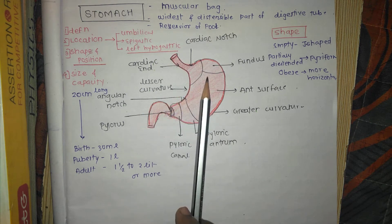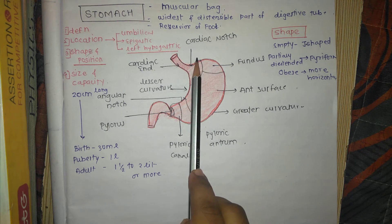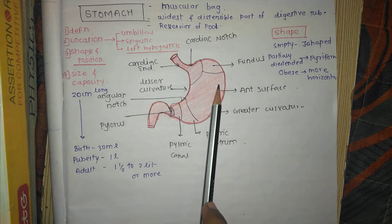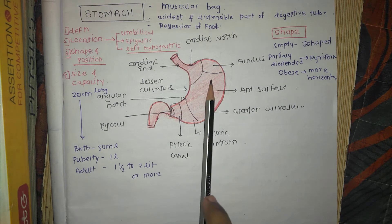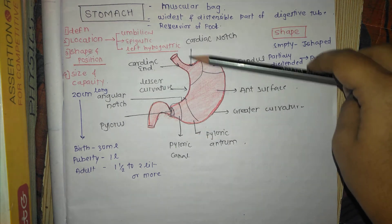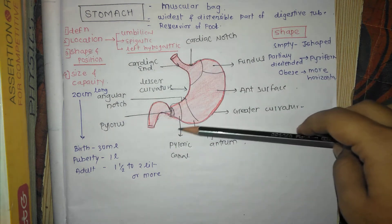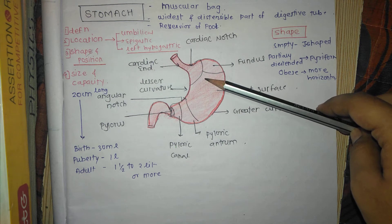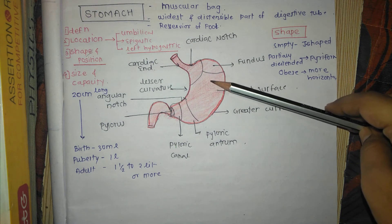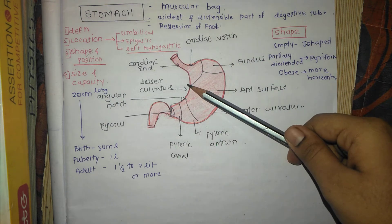The location of the stomach: the stomach is located in the epigastric and the left hypochondriac region. The size and the capacity: the stomach is 20 cm long, and the capacity of the stomach is 30 ml at birth, 1 litre at puberty, and 1.5 to 2 litres or more in the adult.